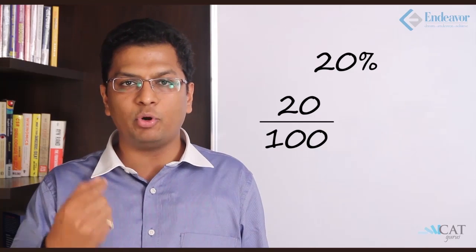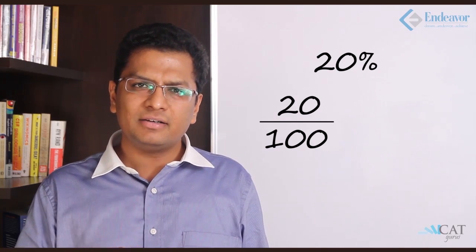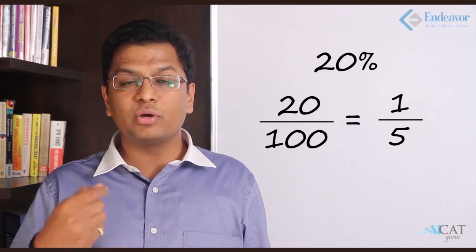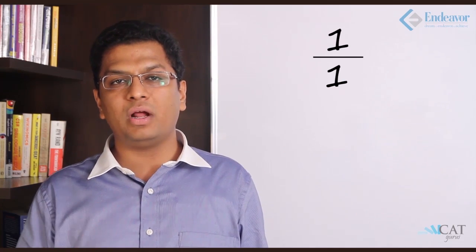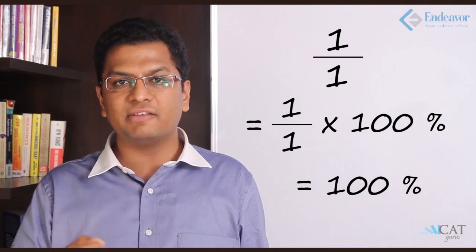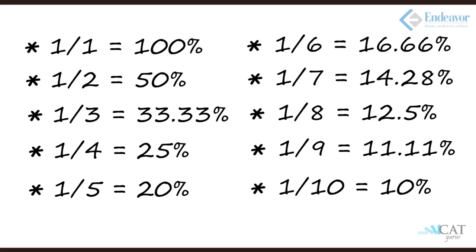Let us start. Twenty percent - how do we write it? It is 20 upon 100. Let us simplify that: 20 upon 100 becomes 1 upon 5. Now this is the ratio. 1 upon 1 converts to 100%. 1 upon 2 converts to 50%. 1 upon 3 converts to 33.33%. 1 upon 4 is 25%.